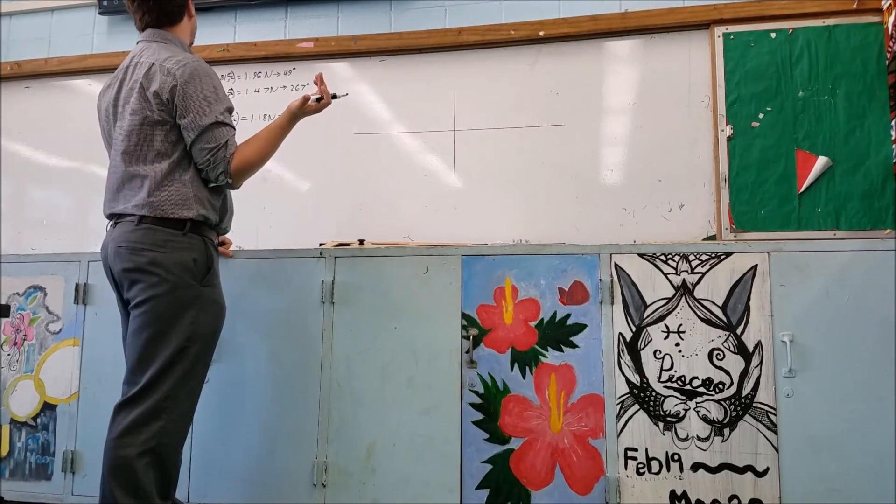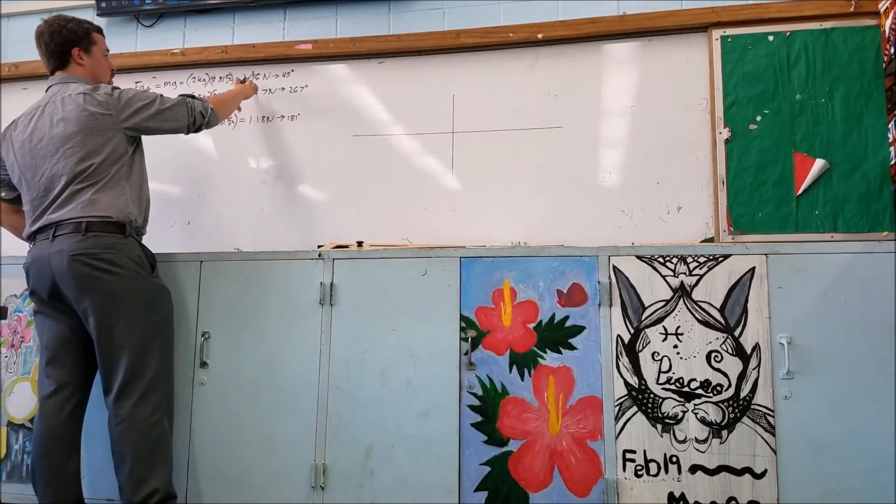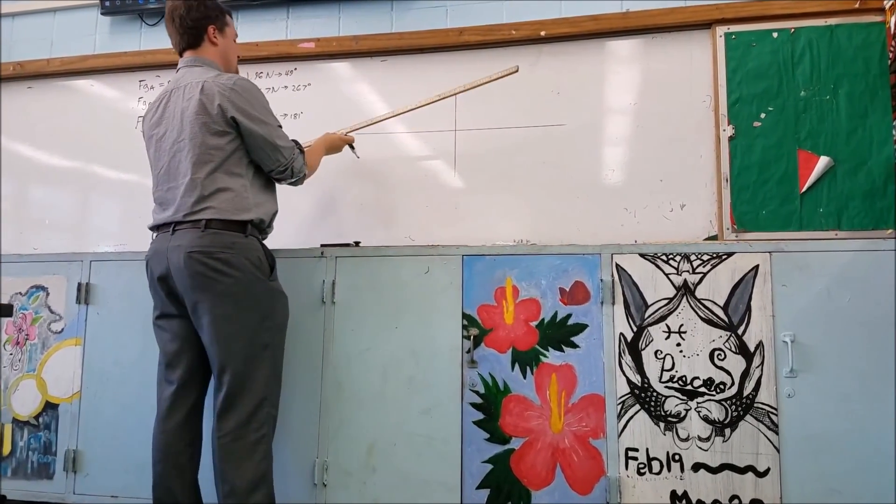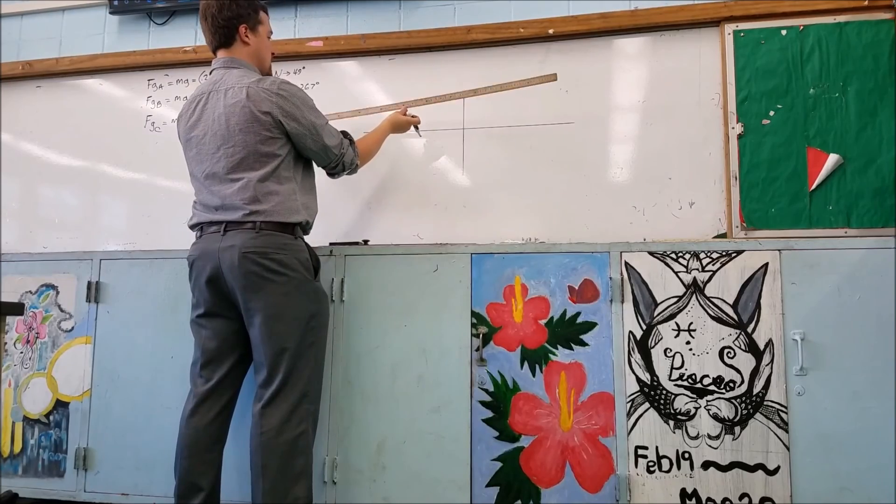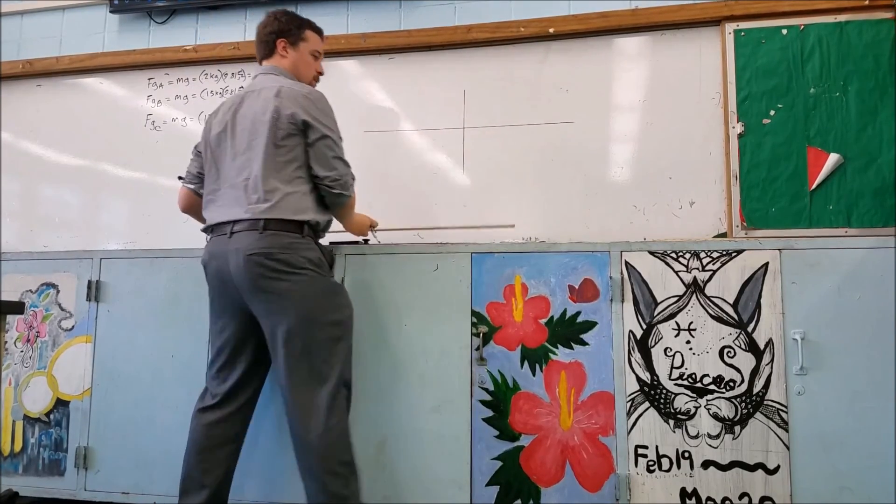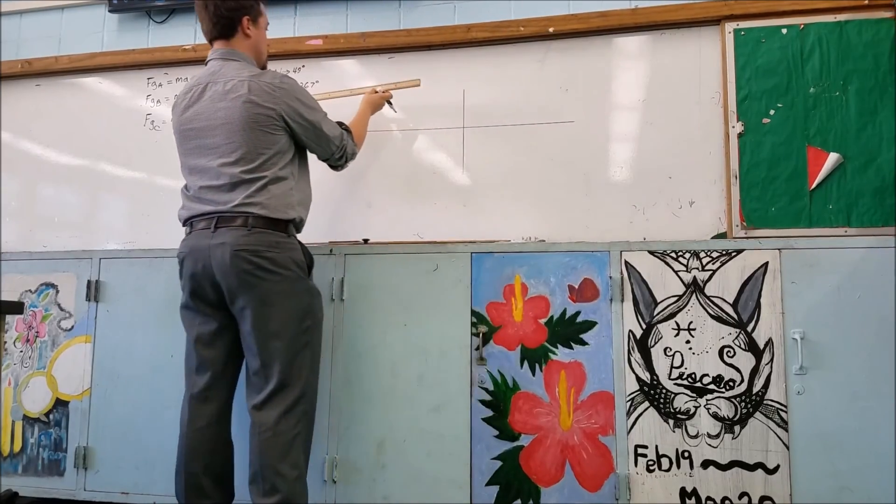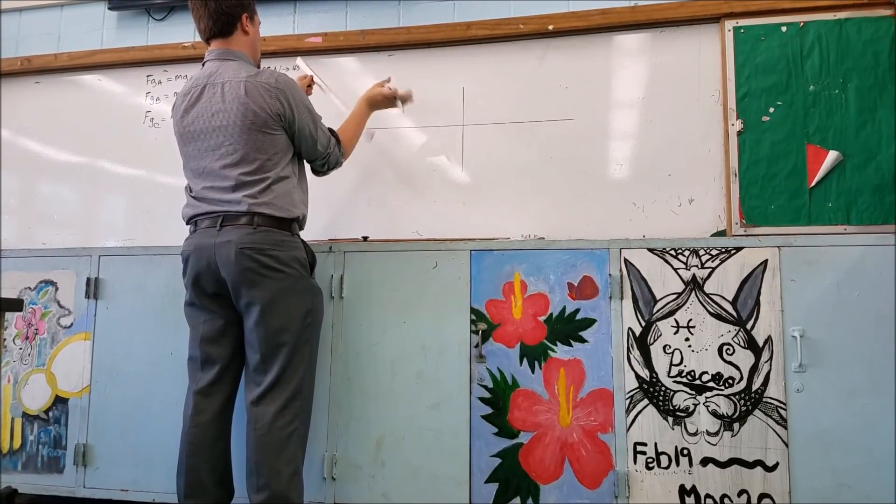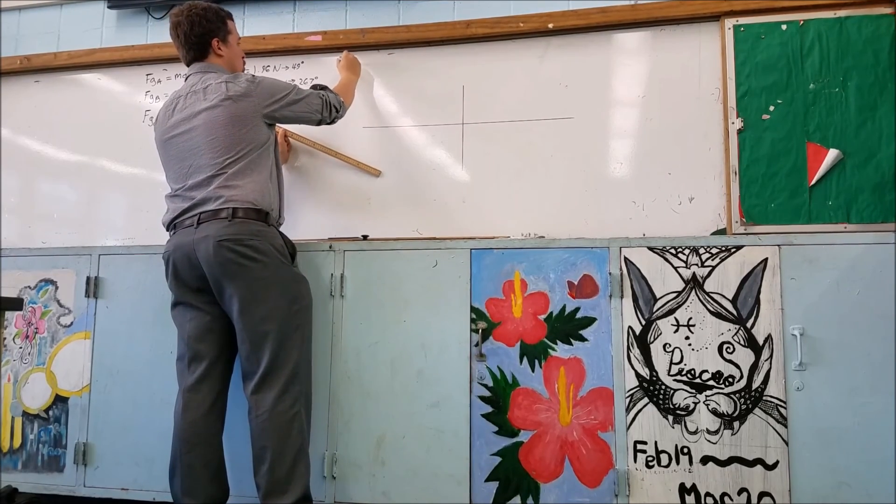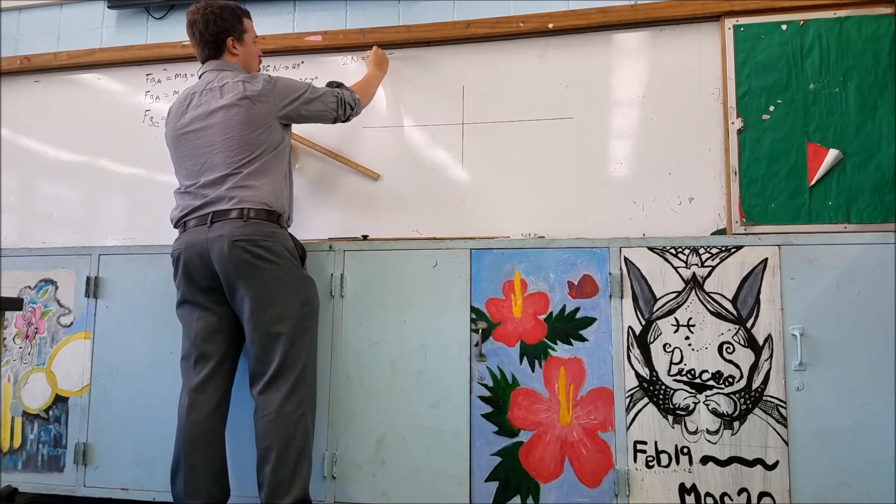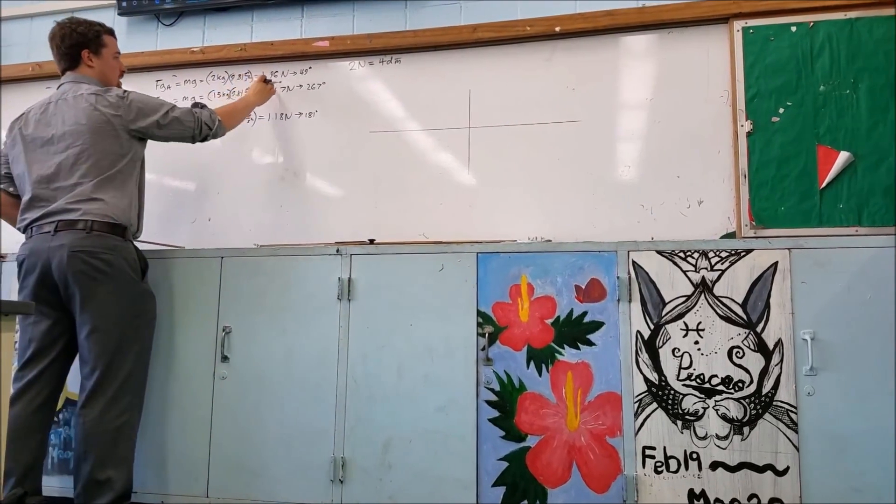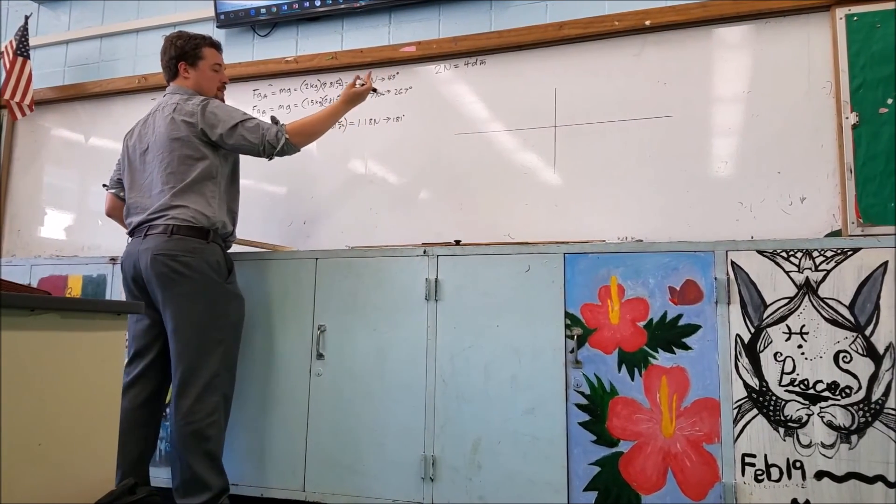Well, my biggest one that I have, my biggest one is 1.96, so maybe I could set it so that let's say 2 newtons is equal to 4 decimeters. So, now if I want to convert these newtons into decimeters, I would take FGA.